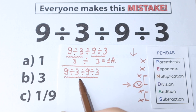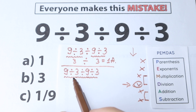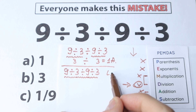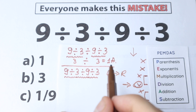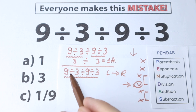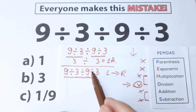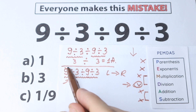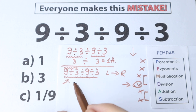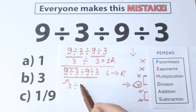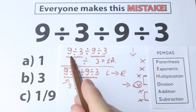Now we need to determine the correct direction: according to PEMDAS, we go from left to right. The first sign from left to right is the first division sign. So the first step is 9 divided by 3, which equals 3. We now have 3 divided by 9 divided by 3. This first step is the same as in the previous approach.